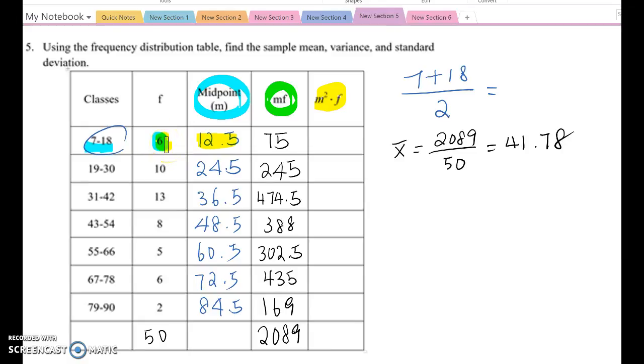12.5 squared times 6, so that case, 937.5 like this. If you calculate that, you will get those big amount values and total sum become 107196.5 here.